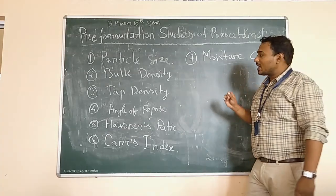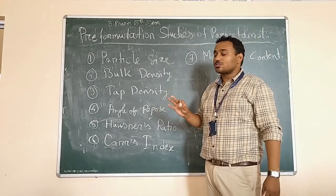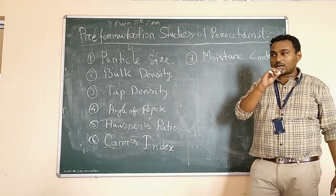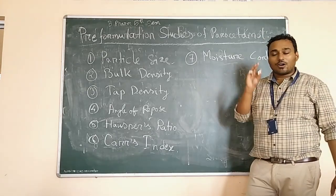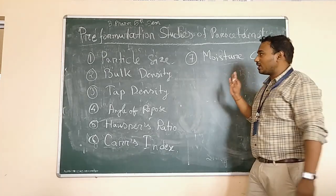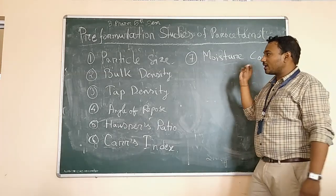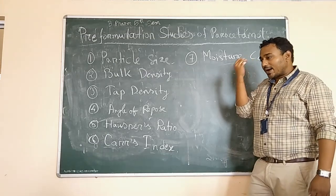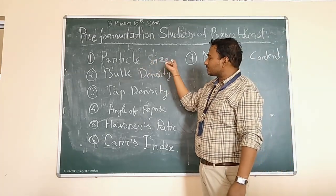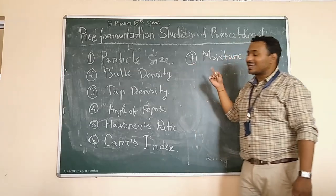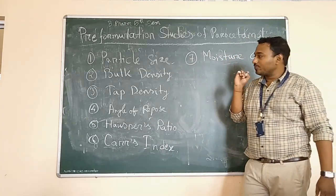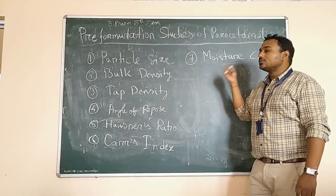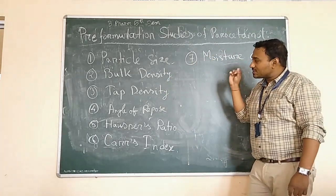First is particle size — how can we determine the particle size? We are taking the particular granules. There are two types of granules: wet granules and dried granules. Wet granules are prepared with the help of wet binders. We are going to check the particle size of the granules with the help of a microscope.